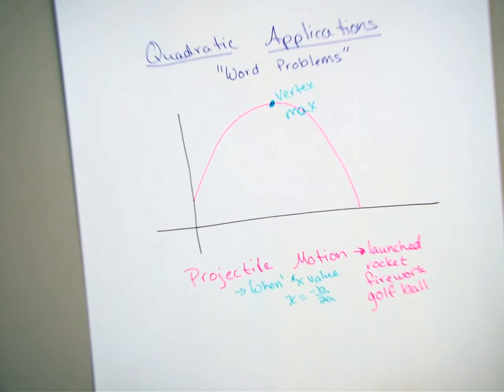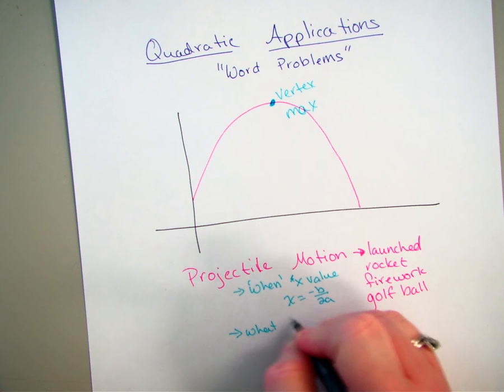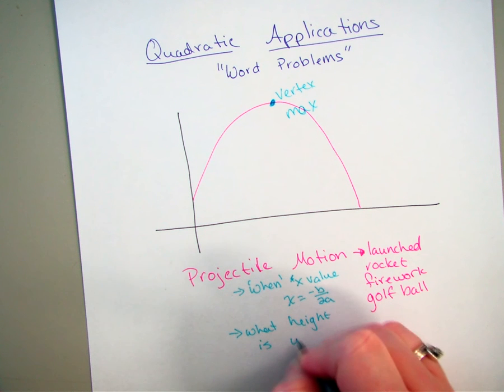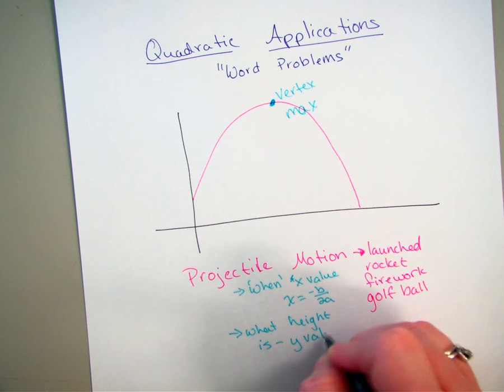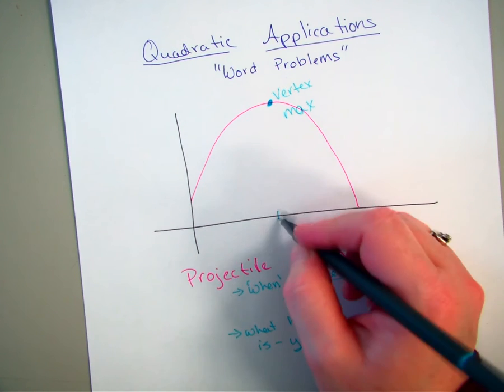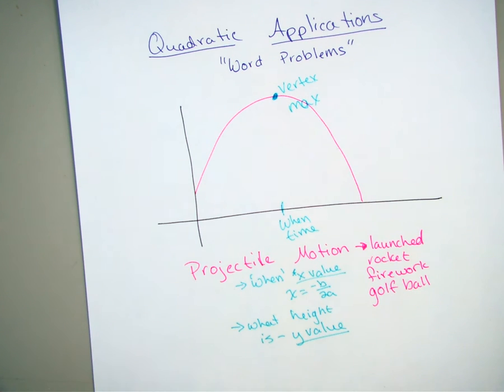Or it is looking for what the actual height is, which is the y value of your vertex. So with the projectile motions, again, it's usually what is that maximum height. When does it reach the maximum height? So that would be your x portion. That's your when, time, any kind of thing like that. And then what is the actual maximum height? That is going to be the y portion of it.